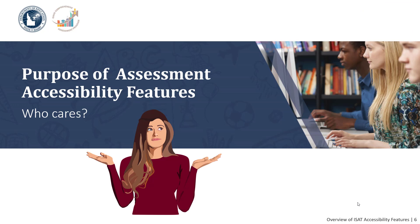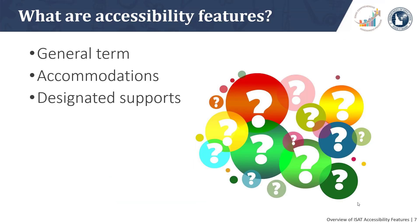I think of the purpose of assessment accessibility features in terms of answering the question: who cares? Although I guess the first question should be: what are accessibility features? We used to talk about testing accommodations, but as a department we started talking about accessibility features. We use this more general term because it includes accommodations and the designated supports that any student with an identified need can use on the ISAT Interim and Summative Assessments.